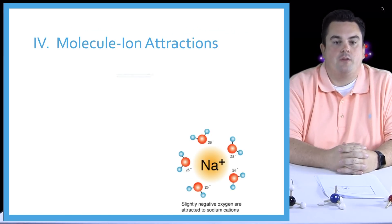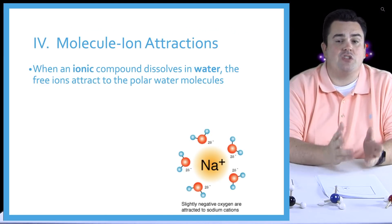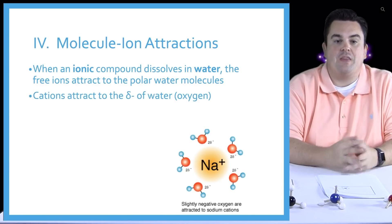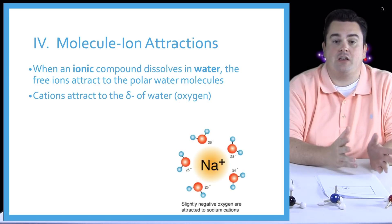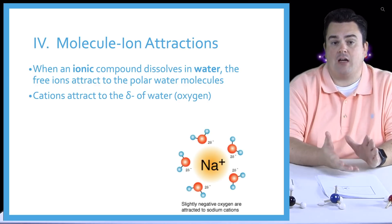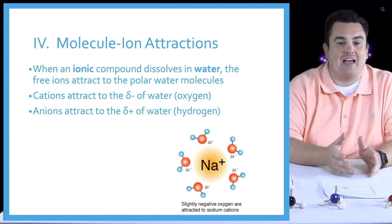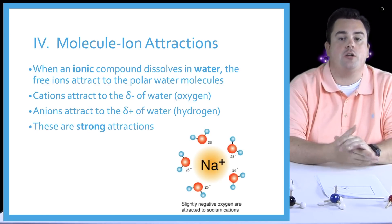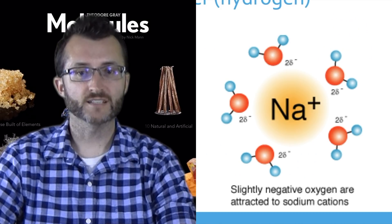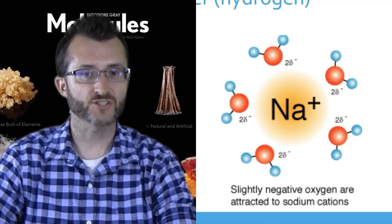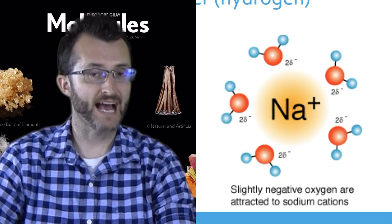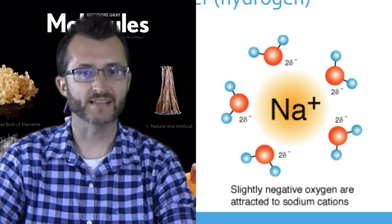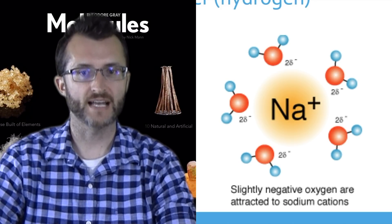Molecule-ion attraction: when an ionic compound dissolves in water, the free ions attract to the polar water molecule. Cations attract to the negative part of water — the oxygen side — and anions attract to the positive side — the hydrogen side. These are strong attractions. For example, Na+ is surrounded by the negative oxygen end of water molecules, creating molecule-ion attraction.